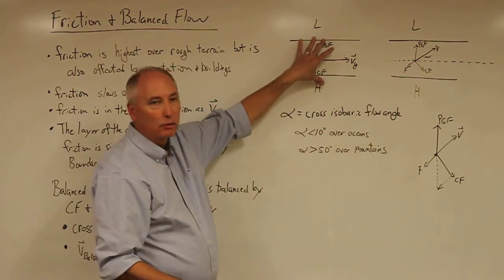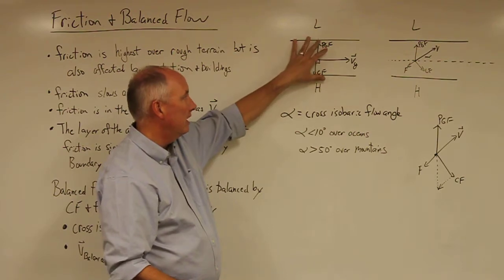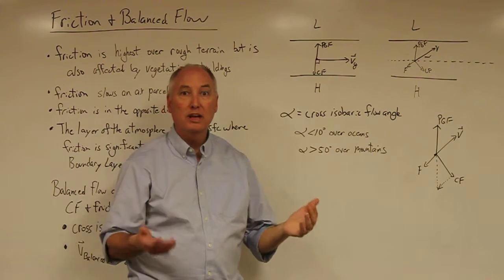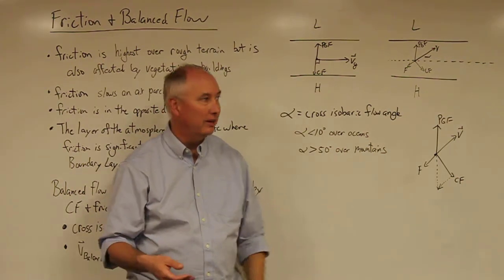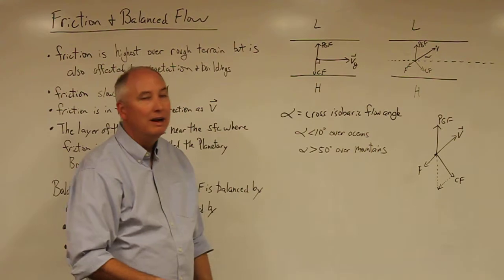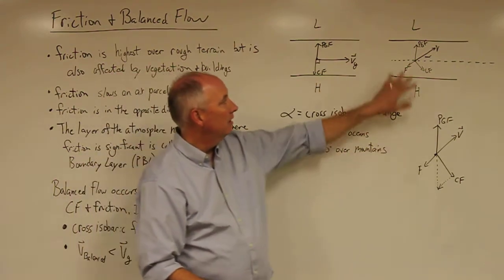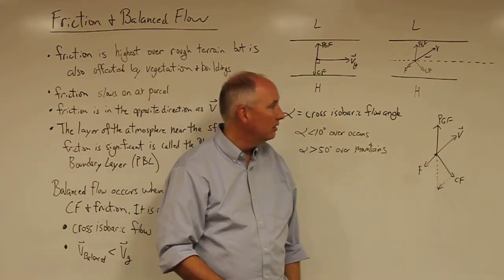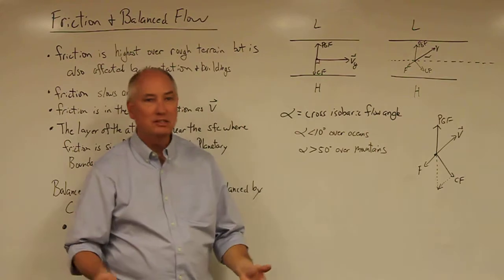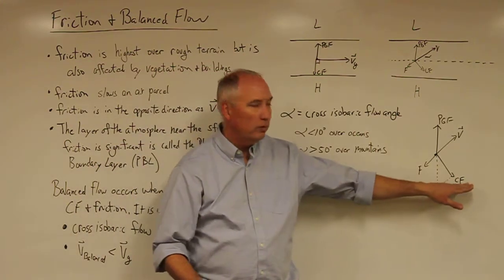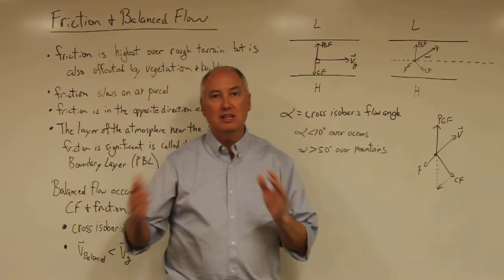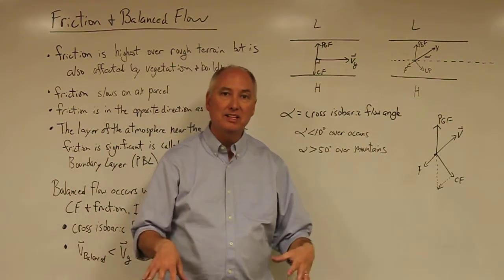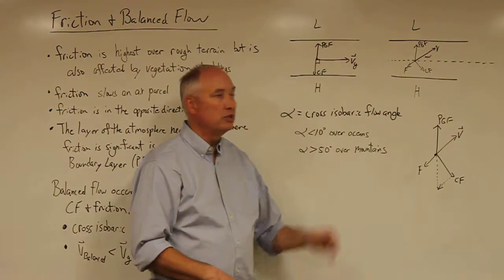Recall that in the gradient wind, there was no cross isobaric flow, and therefore the highs and lows had no way of actually strengthening or weakening. But that's no longer true in the balanced flow. This is the force diagram that we typically observe for air parcels within the boundary layer. This still doesn't apply to the tropics because the Coriolis force is too weak in the tropics. But outside of the tropics, the balance flow is a better approximation for the winds inside the boundary layer than the geostrophic wind.